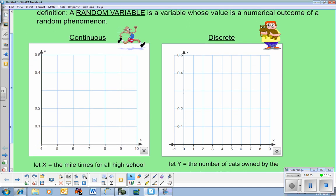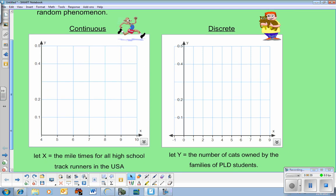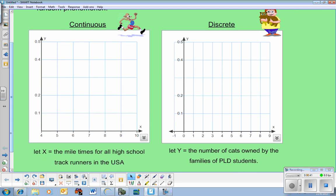So the two main groups, we have continuous and discrete random variables and those are two words that hopefully you know. An example of a continuous would be the mile times for all high school track runners in the USA. And I just I don't know exactly what that would look like. I don't really know what the fastest milers in high school can do, but this is a density curve.